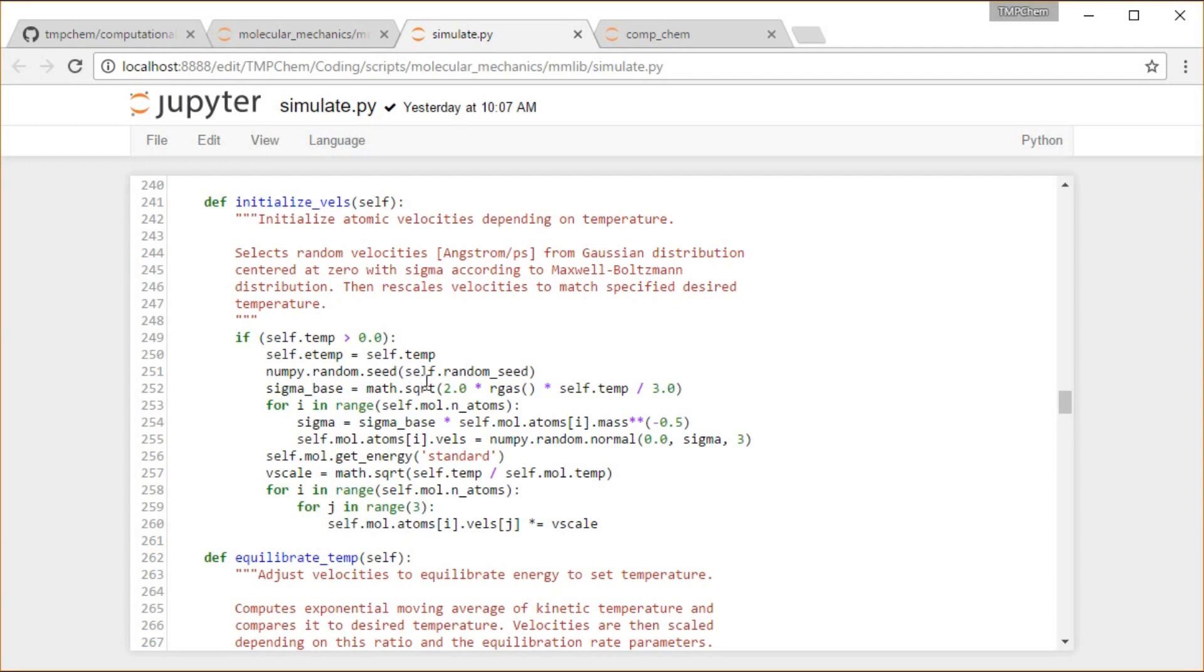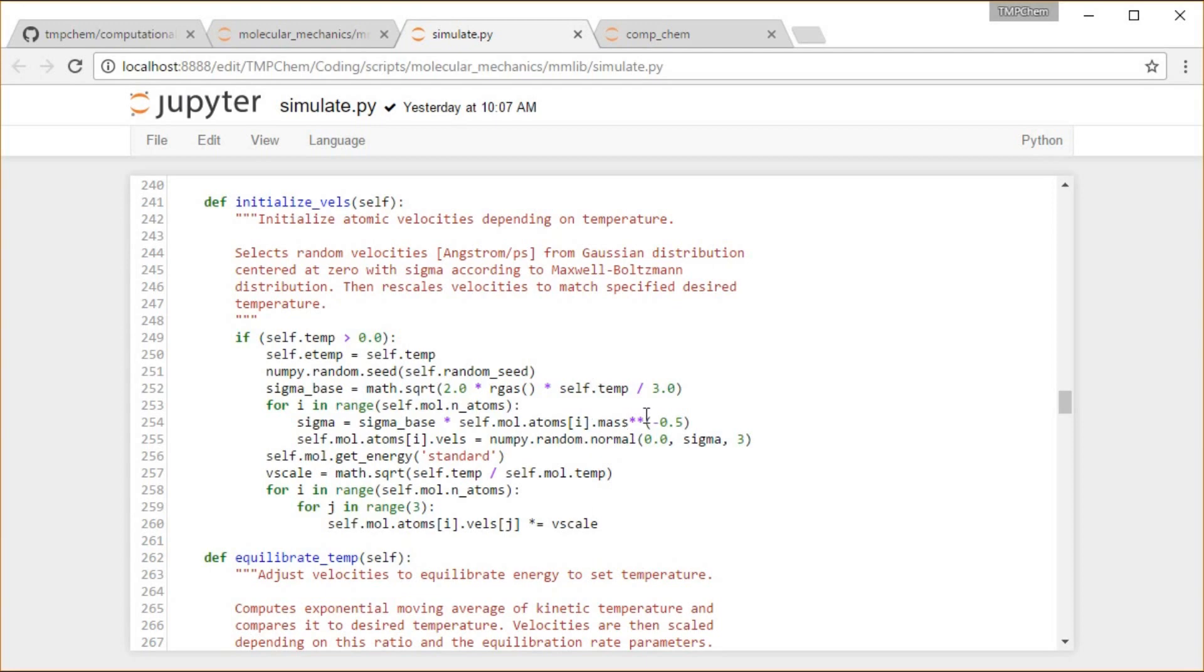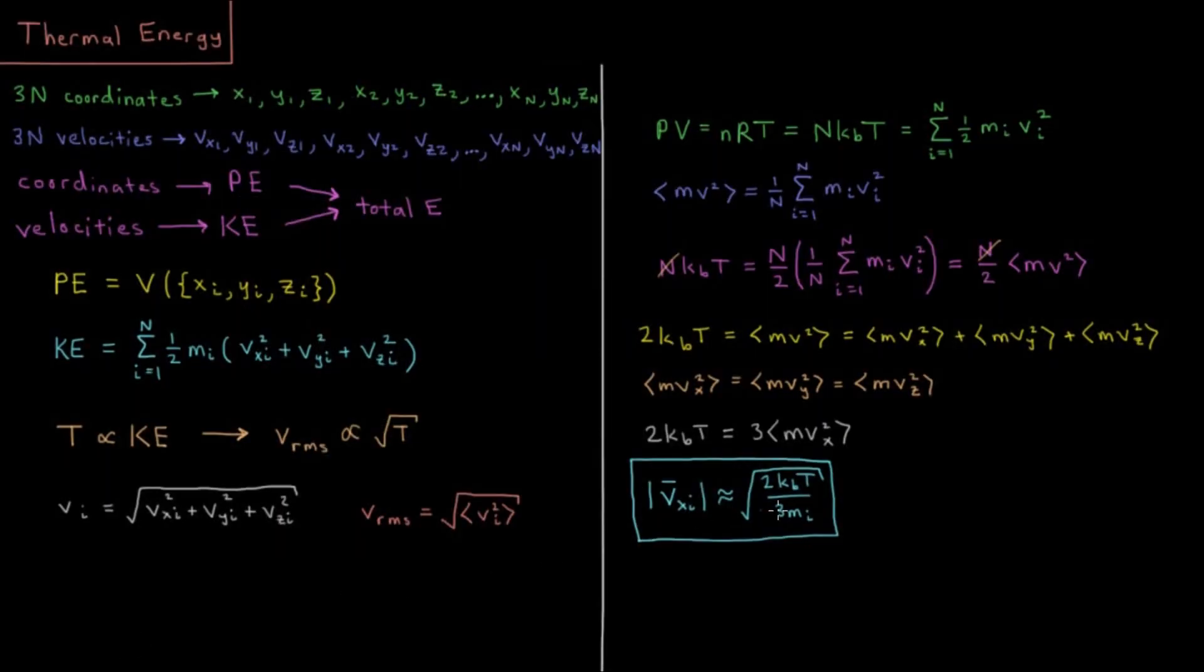We have square root 2 times gas constant times temperature over 3, as we mentioned, right down there. And then there should be a part with the mass, that times mass to the negative one-half, which puts it down on the inside the square root in the denominator.